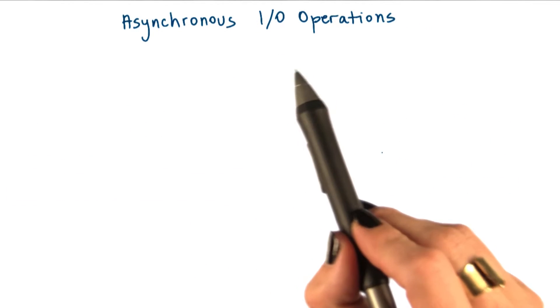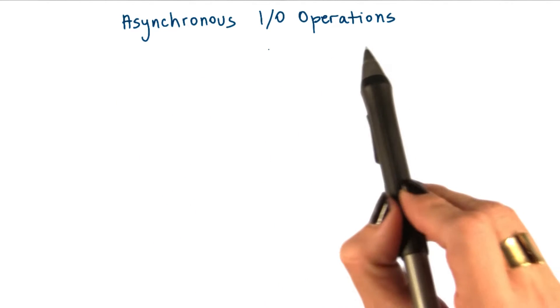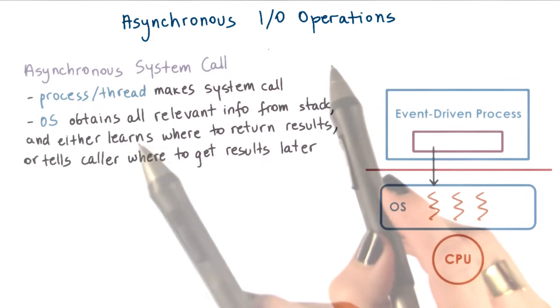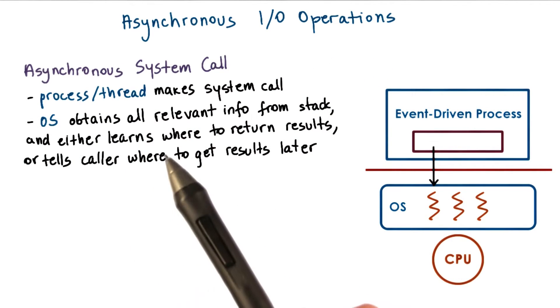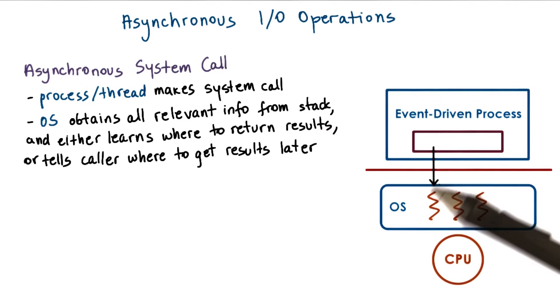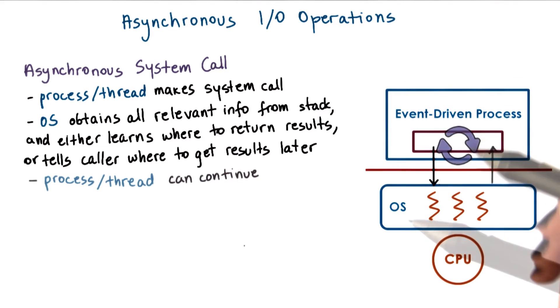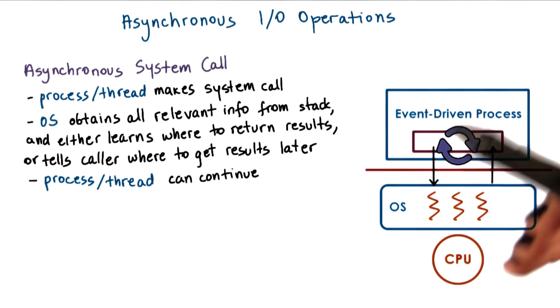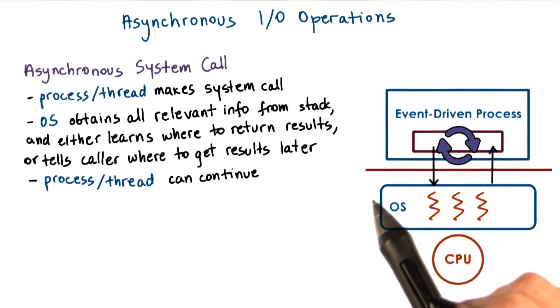One way to circumvent this problem is to use asynchronous IO operations. Asynchronous calls have the property that when the system call is made, the kernel captures enough information about the caller and where and how the data should be returned once it becomes available. Async calls also provide the caller with an opportunity to proceed executing something and then come back at a later time to check if the results are already available.